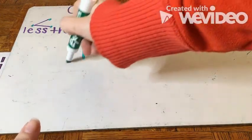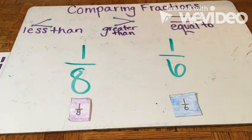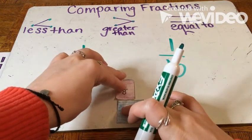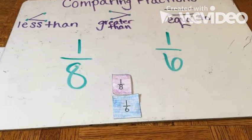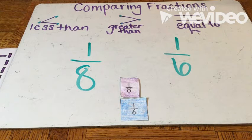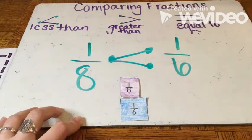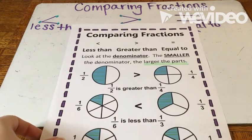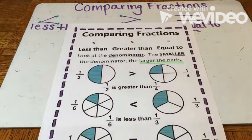Now let's look at another example. I have one-eighth and one-sixth. One-eighth means that my whole has eight parts; one-sixth means my whole has six parts. I'm going to put my fraction bars together just to help me with my visual. I know eight is a larger number than six, but that means that my parts are smaller. Looking at my fraction bars, one-eighth is smaller than one-sixth. So that must mean that one-eighth is less than one-sixth. You are looking at the denominator because we're comparing unit fractions and that numerator is always going to be one. So we're focused on the denominator, or the bottom number, and if your denominator is smaller than the other one, that means the parts are larger.